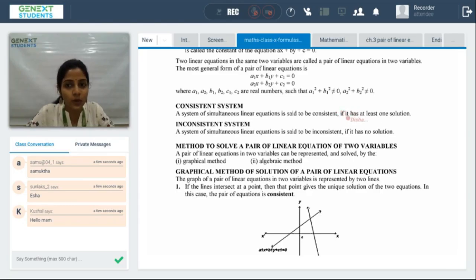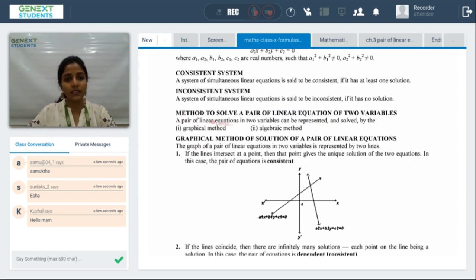A consistent system will have at least one solution. Then we have an inconsistent system which will have no solution. We have this type of question in our exercises, and we'll be solving those questions here in the lecture.